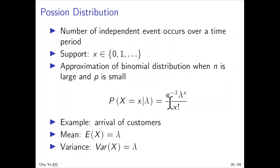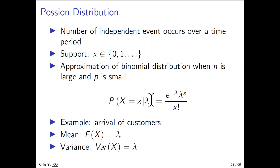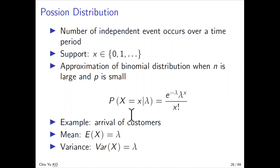So it can be written as e to the negative lambda, times lambda to the power x, divided by x factorial. Lambda is a parameter. Later you will see that lambda is actually equal to both its mean and its variance. Usually a useful way is to model arrival of customers, because arrivals are more like independent events and also satisfy n large and p small.